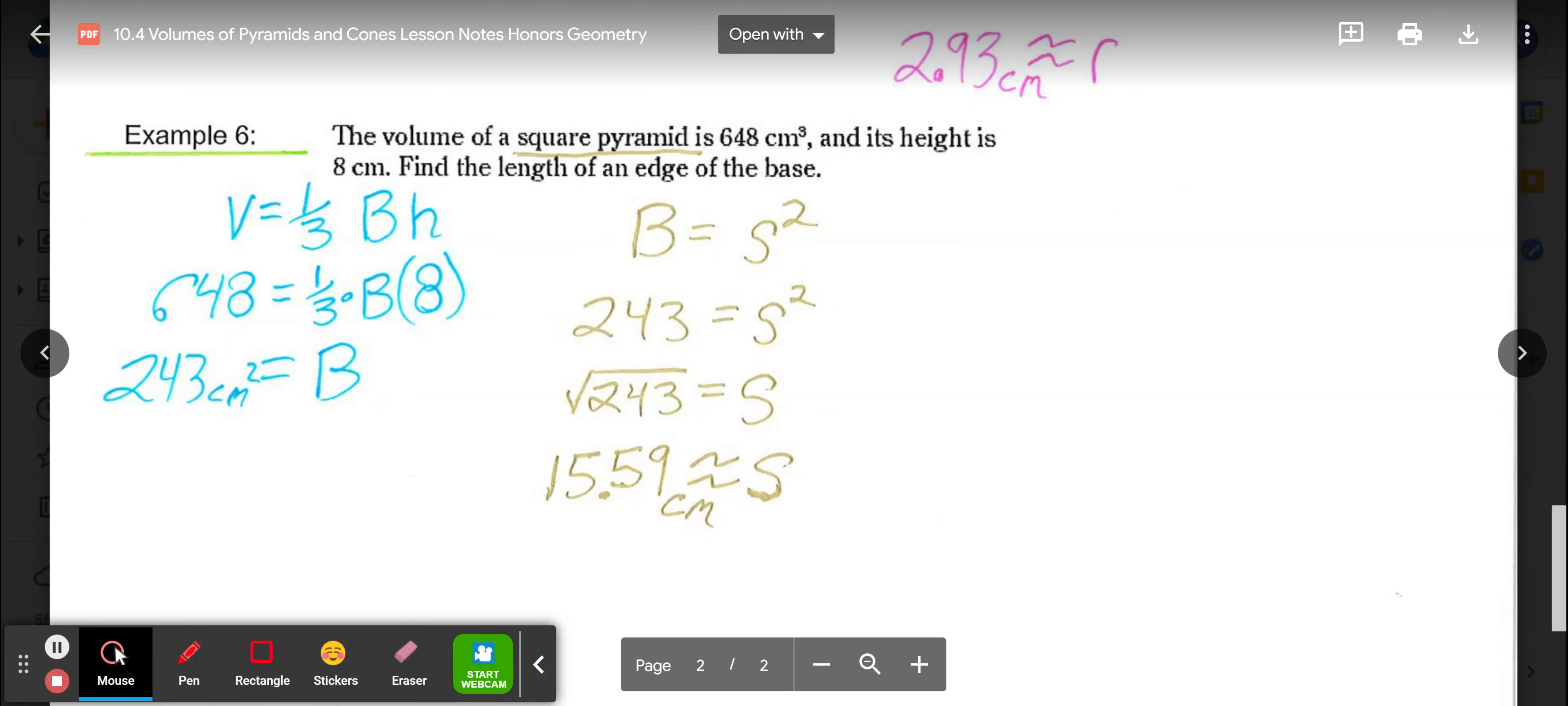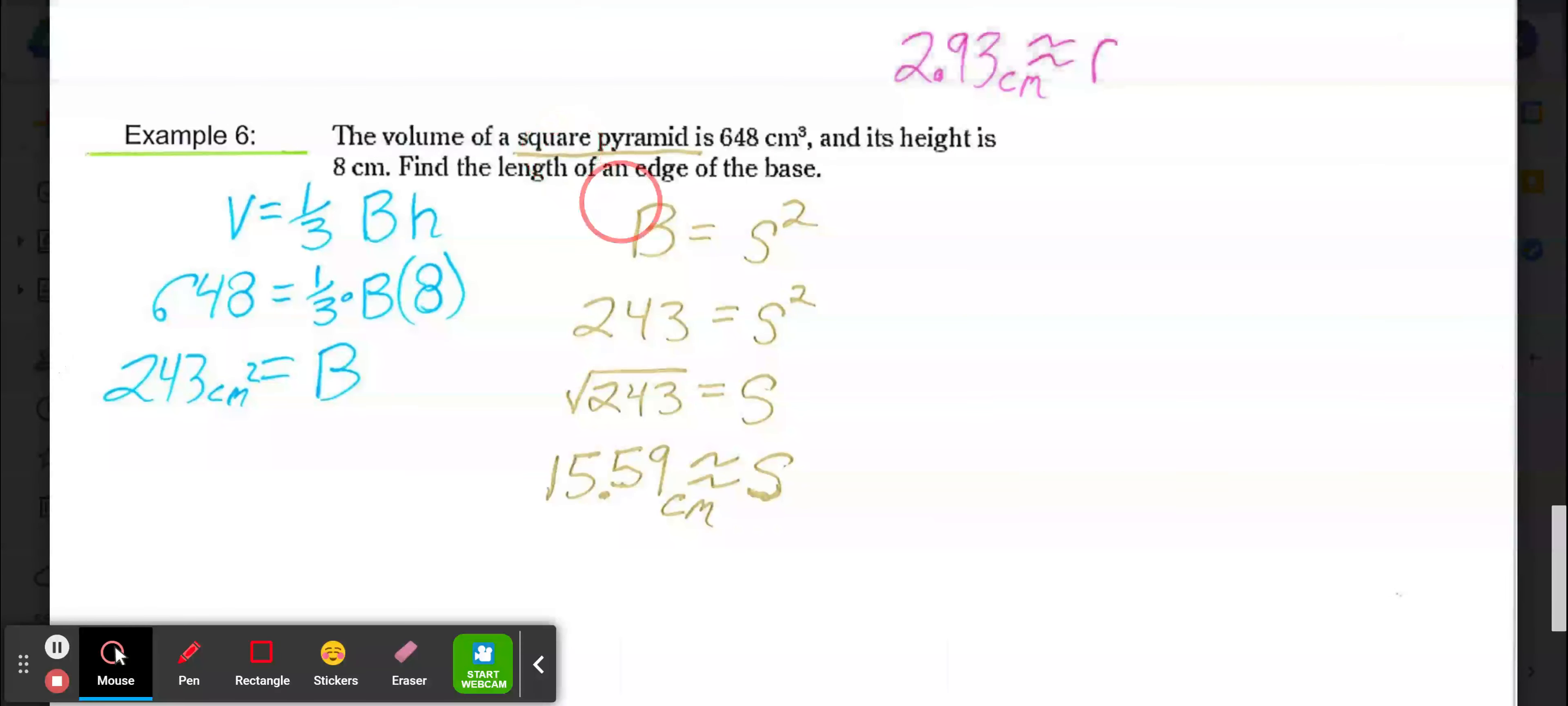Then if our base is a square, we know the area of our base equals the side length to the second power or squared. So 243 equals our side length squared. If we square root 243, we get the length of a side which would be the edge of the base, because all four sides of that base are the same length with it being a square. So square root of 243 is approximately 15.59 centimeters.